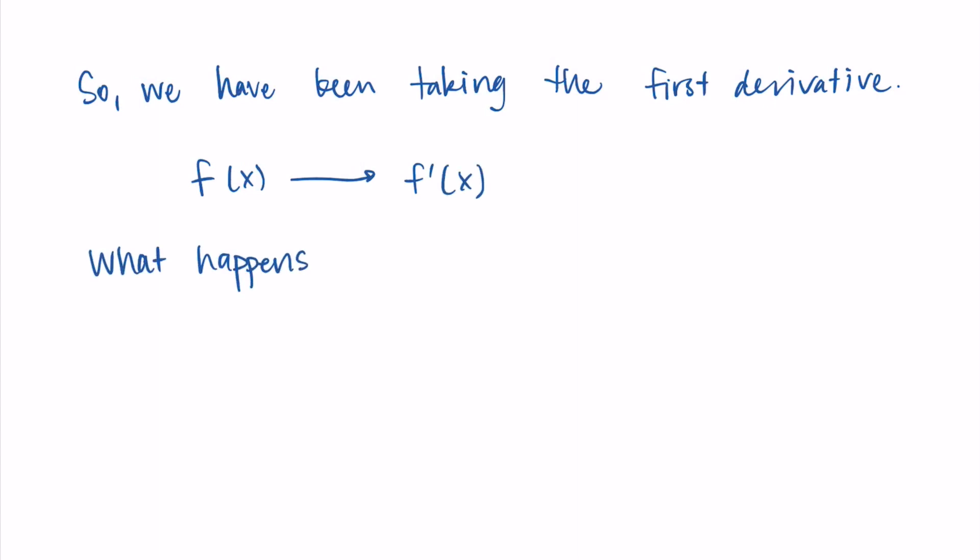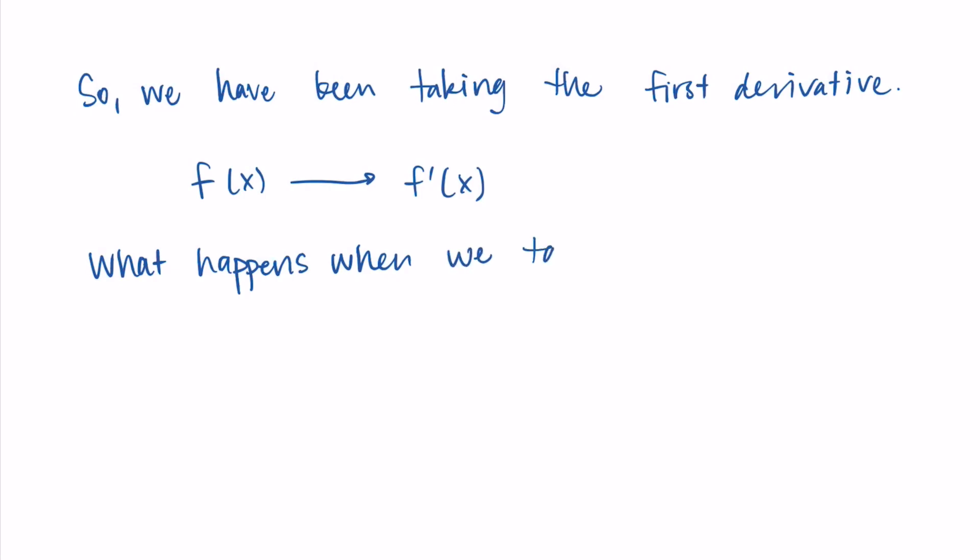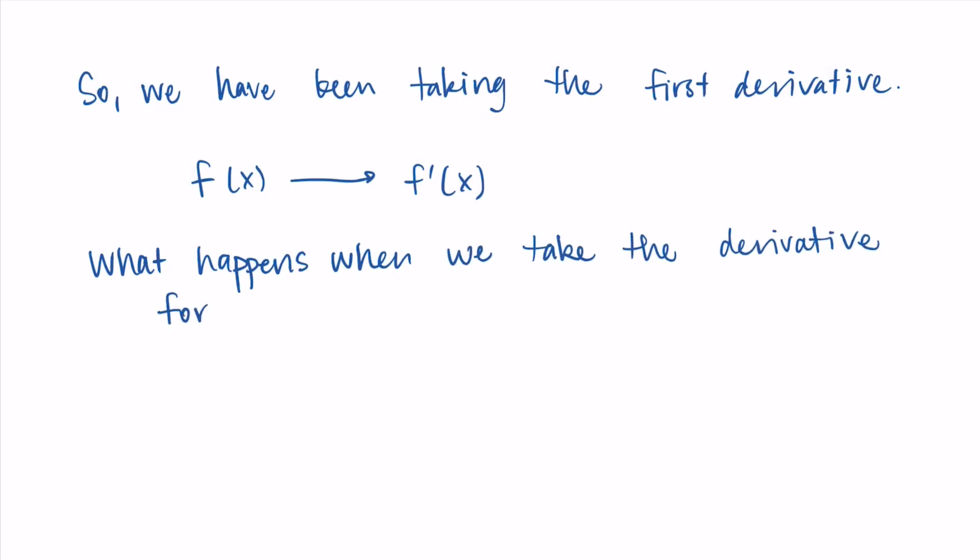We're just going to talk specifically about the second derivative today. So what happens when we take the derivative a second time? Let's say we now have f double prime, the derivative of f prime. We write f''(x) and call it f double prime. Just to make sure you understand what's going on here, I'm going to do a quick example.